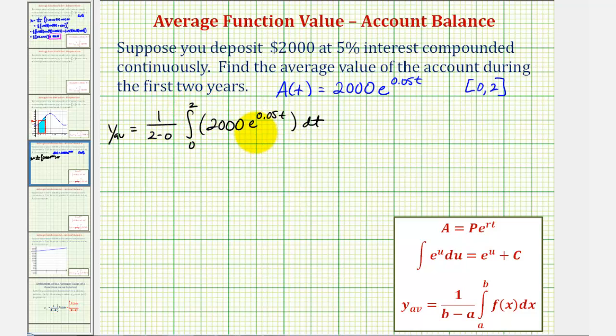Let's go ahead and simplify this. Notice how this is 1 half, we can factor out the 2,000, so we can write this as 1,000 times the integral of e to the power of 0.05t from 0 to 2.